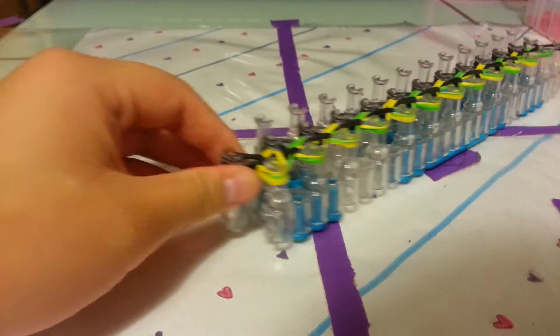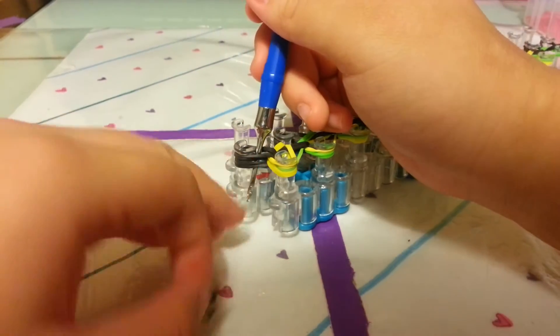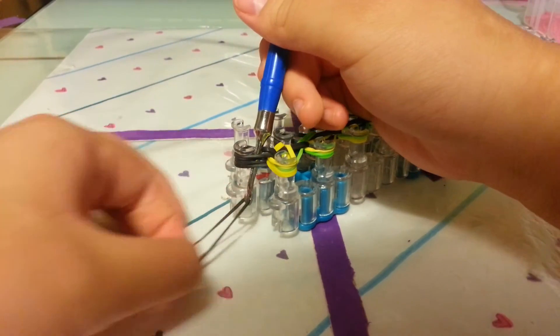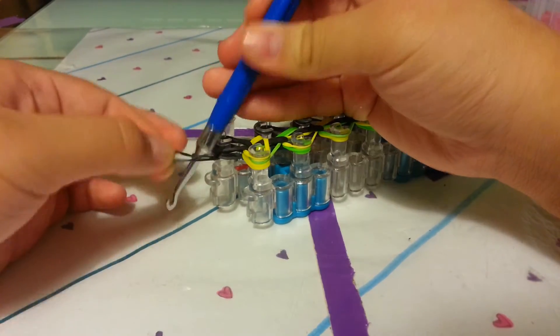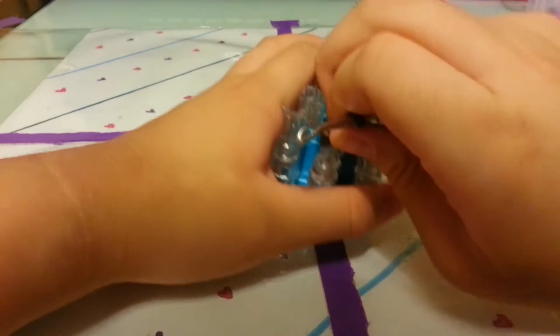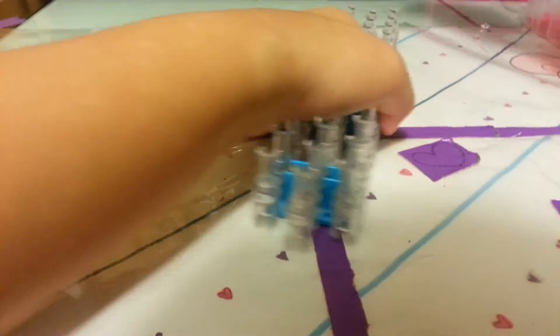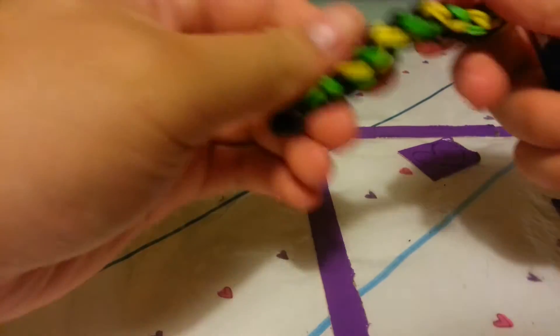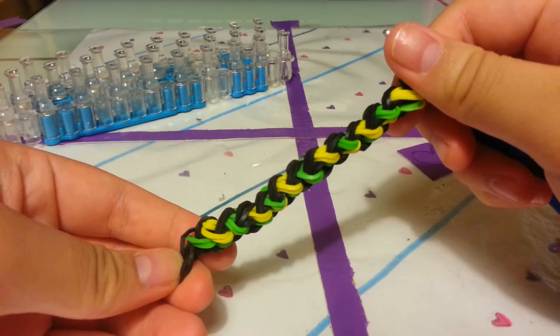Now let's take our extension color - mine's going to be black. I'm going to put my hook through all these bands and place my band through like that. Now you can carefully pull it off the loom. This is what the Split Braid should look like. Now let's add our extension.